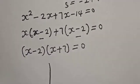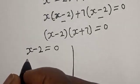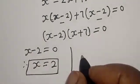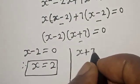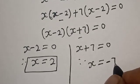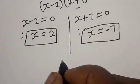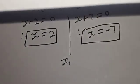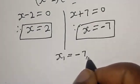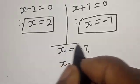Factoring: x(x minus 2) plus 7(x minus 2) is equal to 0, giving (x minus 2)(x plus 7) is equal to 0. There are two cases. First case: x minus 2 equals 0, therefore x equals 2. Second case: x plus 7 equals 0, therefore x equals minus 7. So our solutions are x equals 2 and x equals minus 7.